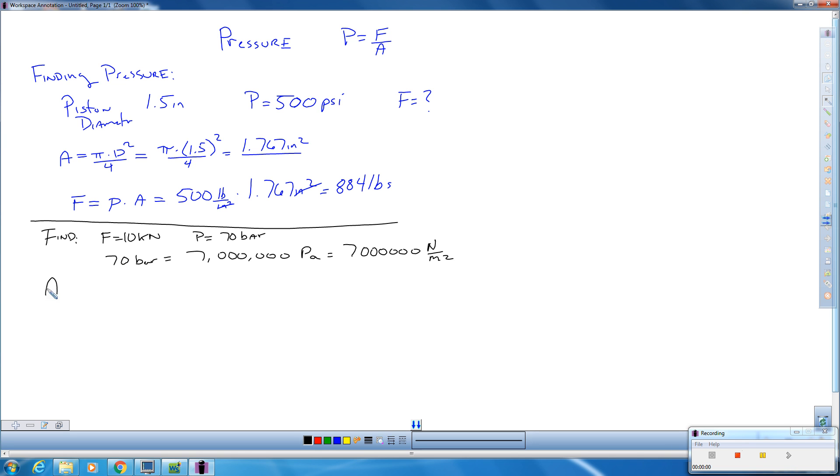So first and foremost, you've got to find the area. Area is force over pressure. So the force we have is 10,000 newtons. Remember k is the thousand.